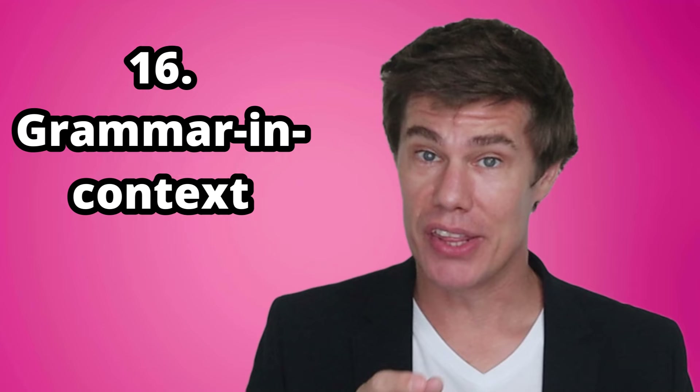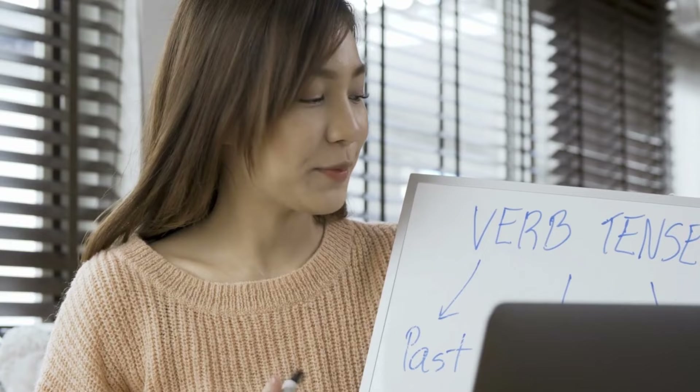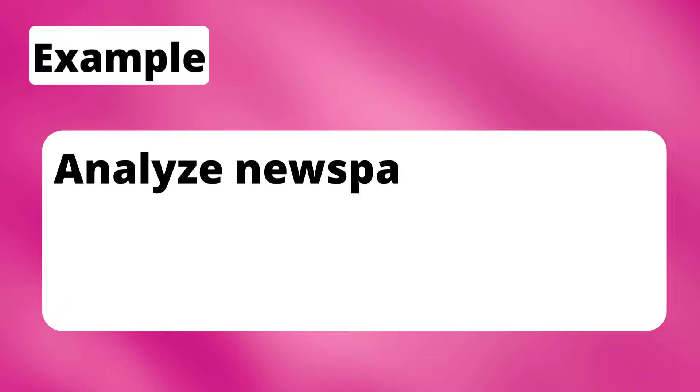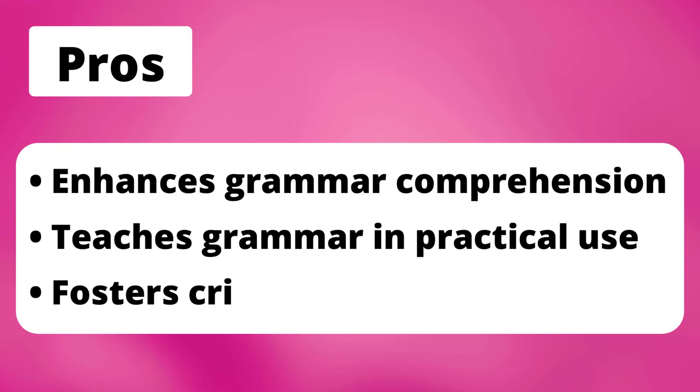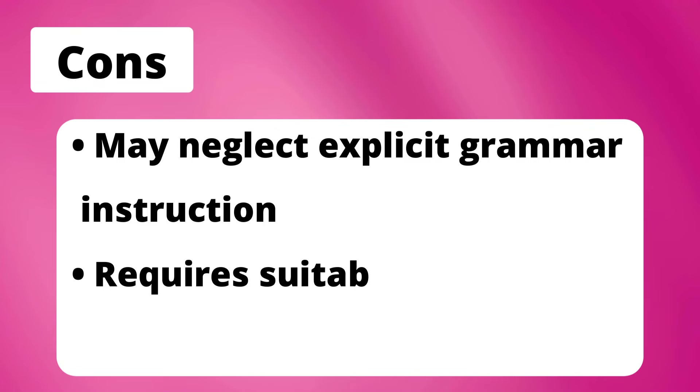The grammar in context approach teaches grammar within the context of real-life situations and texts. Learners analyze authentic materials such as newspaper articles or literature to identify and understand grammar rules in practical use. This method enhances grammar comprehension and encourages critical thinking. Example: analyze newspaper articles or short stories to identify grammar rules in context. Pros: enhances grammar comprehension, teaches grammar in practical use, fosters critical thinking. Cons: may neglect explicit grammar instruction, requires suitable materials, challenging for beginners.